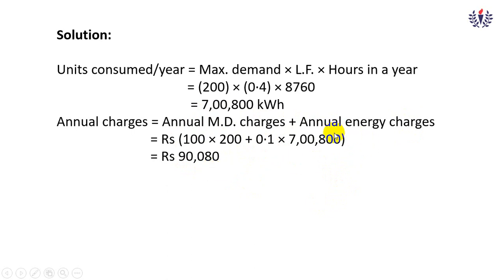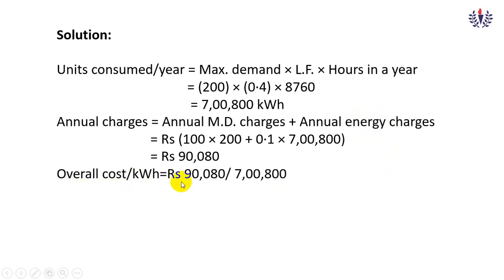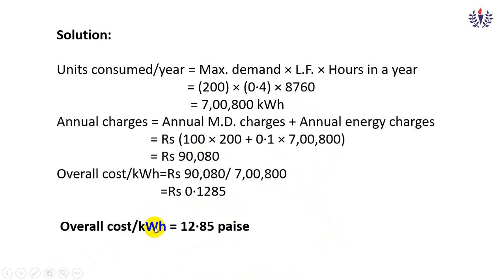Since we want the overall cost per kilowatt hour, we divide the total annual charges by the units consumed per year: 90,080 ÷ 700,800 = rupees 0.1285, that is 12.85 pies per kilowatt hour. This is the answer for the first problem.